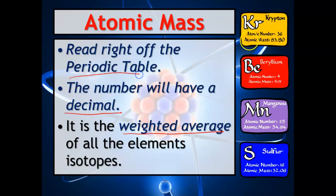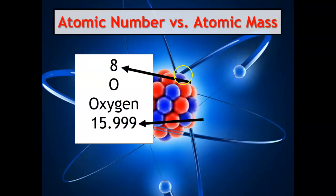It is a weighted average. It has a decimal on the periodic table. So if you come over here to krypton, 83.80, that is its atomic mass and its weighted average, just like your grades in your grade book.